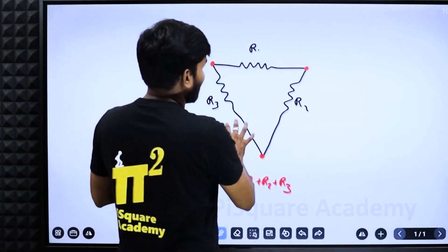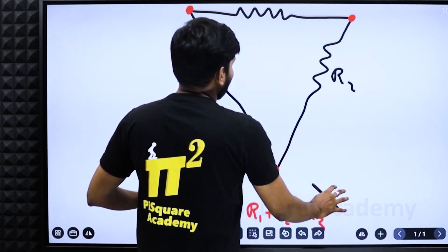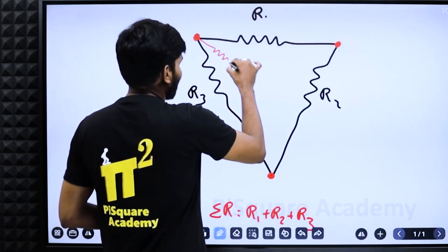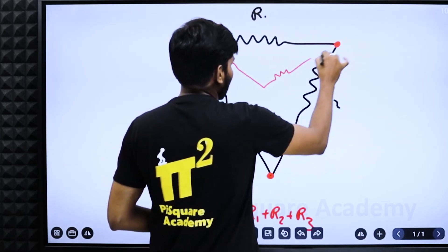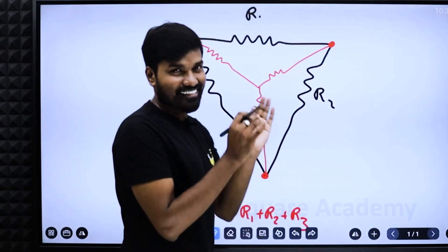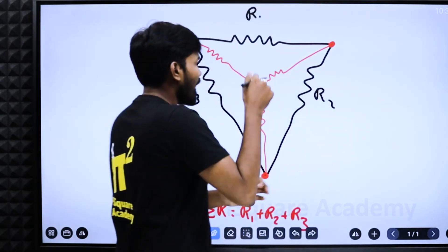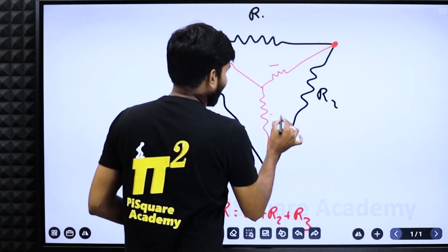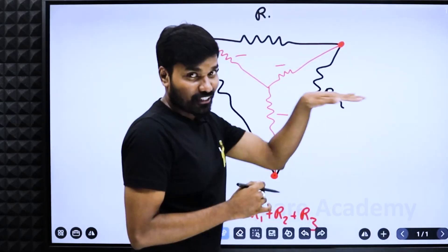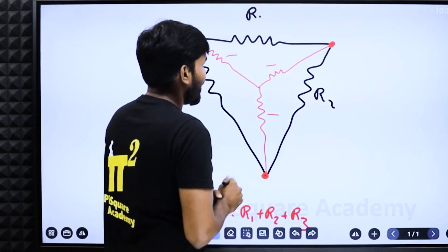Now, third step is construct the star between these three marked points, not anywhere else. Just between these three marked points, construct the star along with this line. This line is the division line.